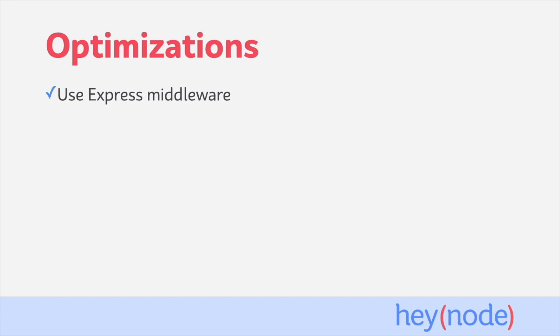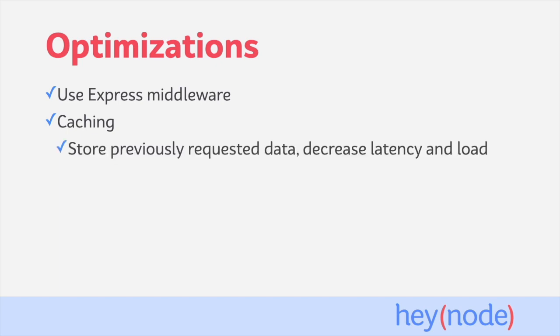We will also implement some optimizations for the API proxy to improve performance of retrieving the data. These optimizations will take the form of middleware added to the Express server. We'll be implementing caching at the API proxy. Caching allows us to store previously requested data so we can return that data without having to retrieve it from the source each time it is requested.